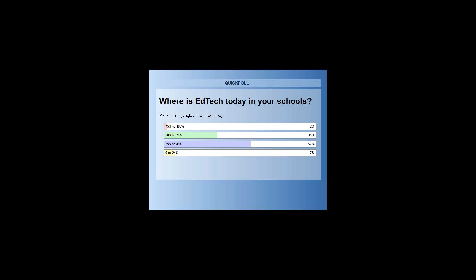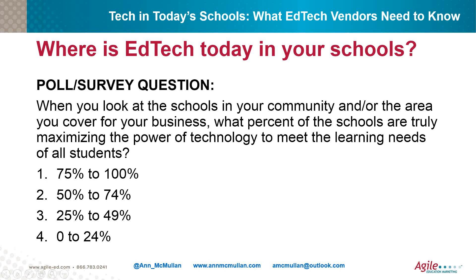The majority — 57% — are in that 25% to 49% range of technology usage. About 2% selected 75% to 100%, and 7% selected 0% to 24%. The takeaway is that we still have lots of work to do. We need to get to that 75% to 100% — actually 100% is our target — and hopefully together we can make that happen sooner rather than later for our students.